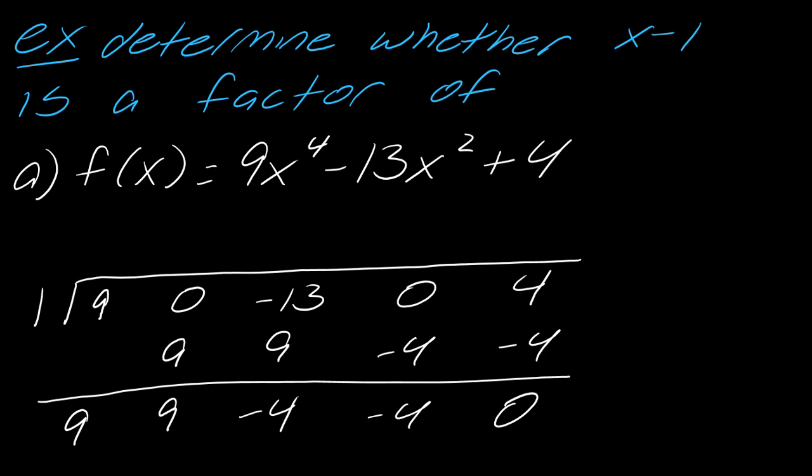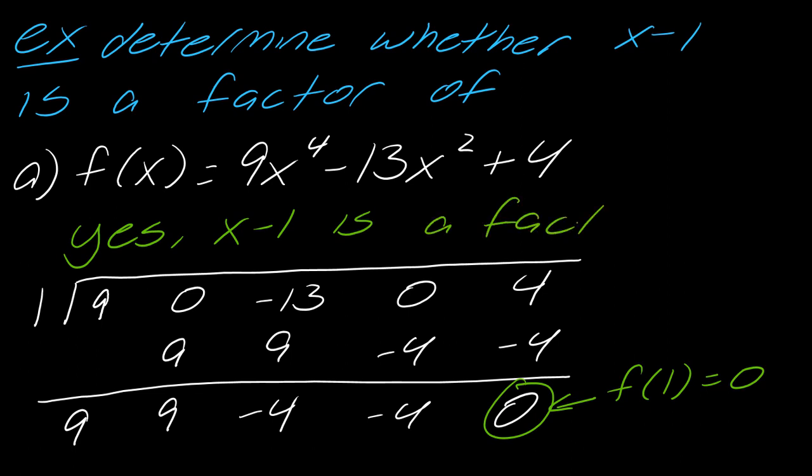So there's a couple of things that we know about this. We've been talking about this in the series. So what this means, this result here, this result means that f(1) is equal to 0. And also because we have a 0 here, because this ends up being a 0, we have yes, x minus 1 is a factor of this polynomial. So that's really what we're looking for here.